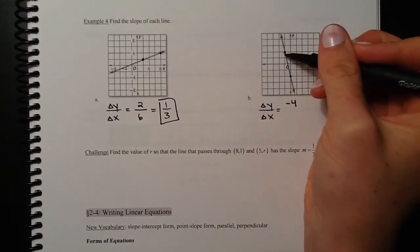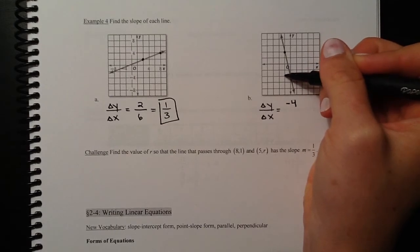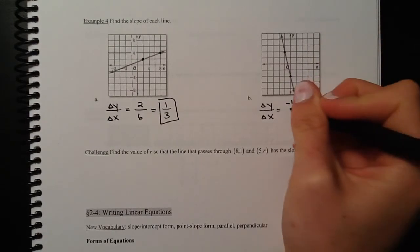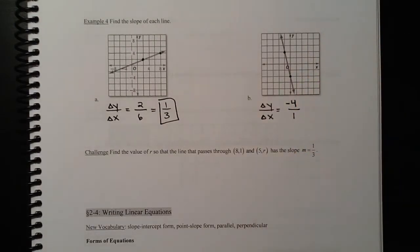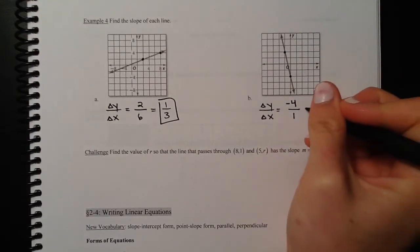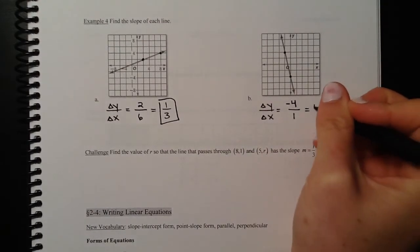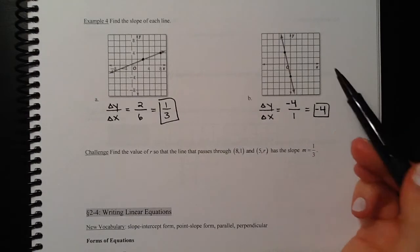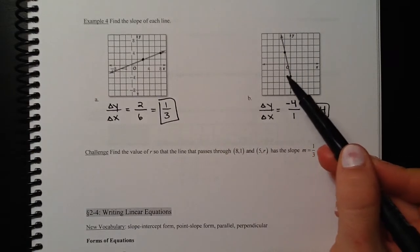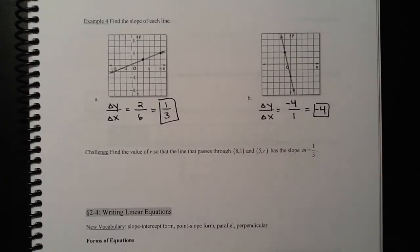After I go down four, I go over one to the right. My change in x would be a positive one. Going to the right is positive. We can just write as a negative four. What that means is every time y goes down four, x goes over to the right one, and it repeats that pattern over and over.